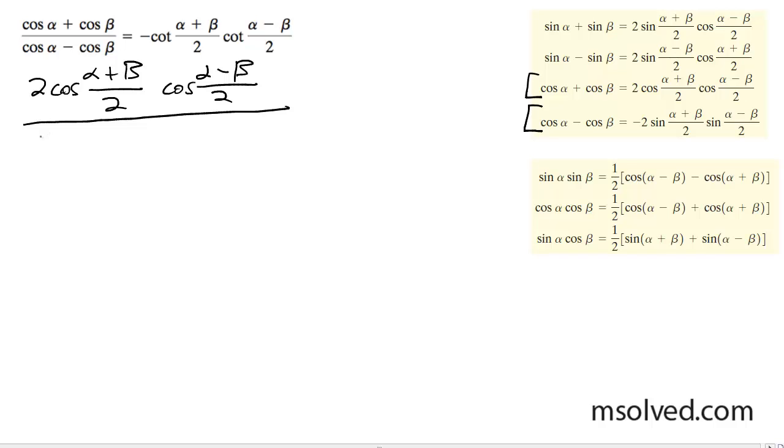So we're going to use the next formula, which is going to be negative two sine alpha plus beta divided by two, and then sine alpha minus beta divided by two.